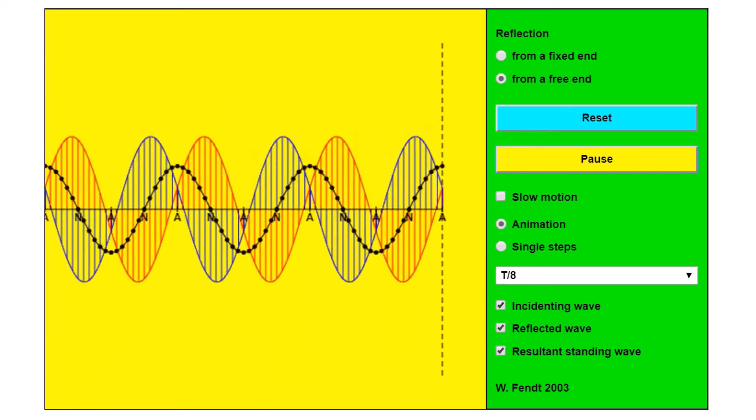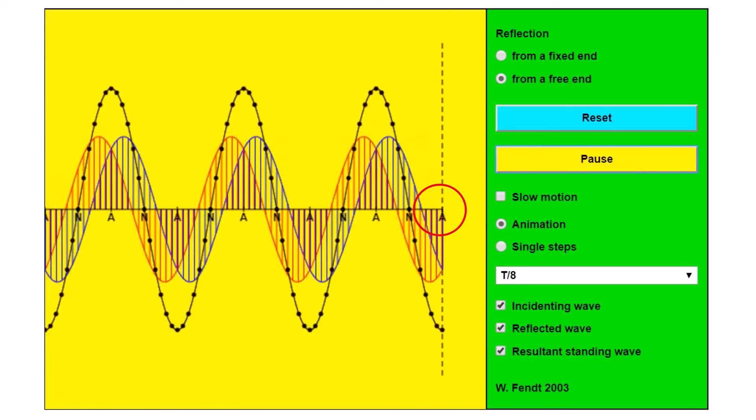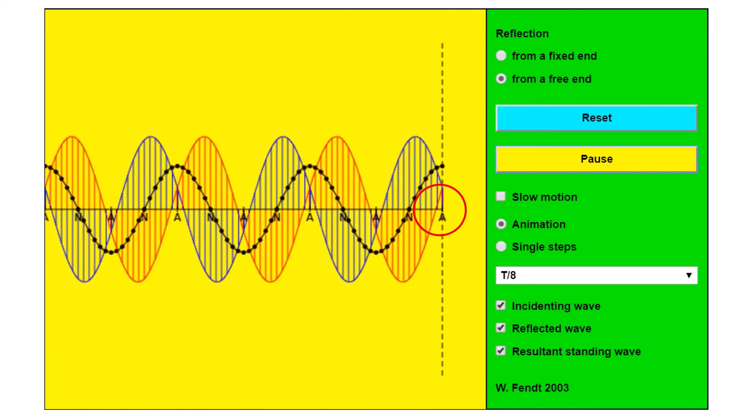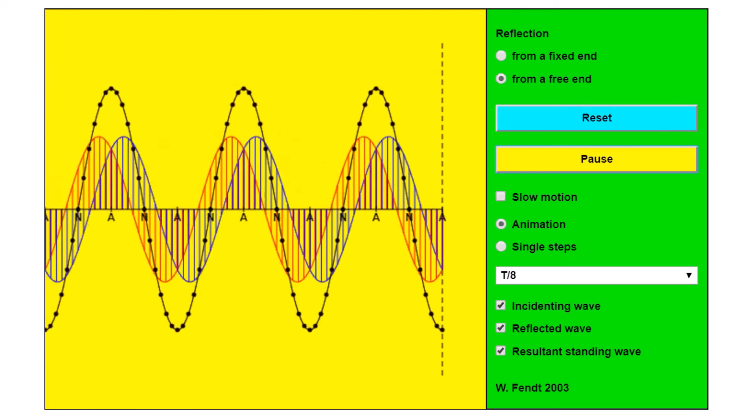But notice this time around, what we have at the end is an anti-node, not a node. You might say, oh of course, because it's a loose end, right? Loose end must be an anti-node. Yeah, that's correct,